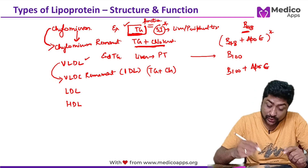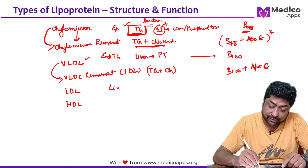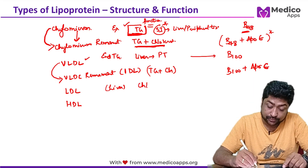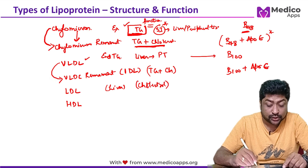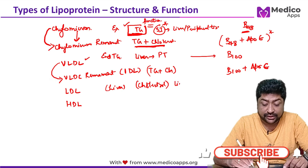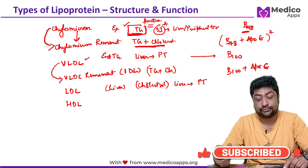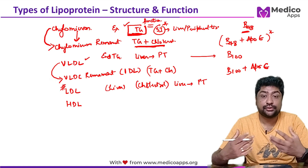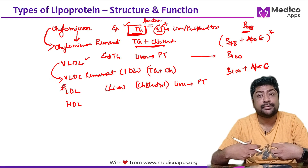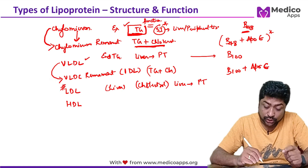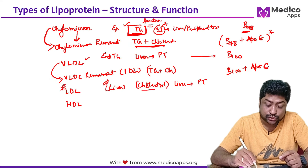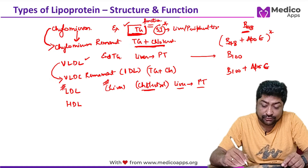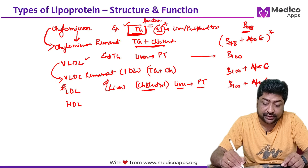LDL is formed in the liver but does not transport triglyceride — it transports cholesterol. Whatever cholesterol is formed in the liver, LDL transports it from the liver to peripheral tissue. That is why it is called bad cholesterol: high LDL means a lot of cholesterol is being distributed throughout peripheral tissue. Its apoproteins are ApoB100 plus ApoE.